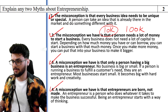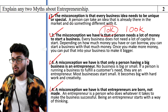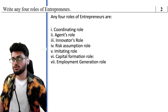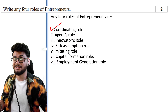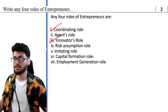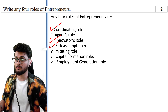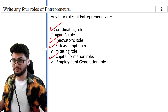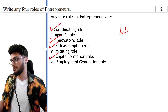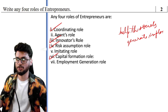Another myth: entrepreneurs are not born, they are made. Decision-making capability means any person can become an entrepreneur. For roles of entrepreneurs: they coordinate activities within their startup or company, they innovate and create new things and give new ideas, they assume risk — any startup is bound to risk, it may succeed or fail. Entrepreneurs also need to collect capital. They also help society generate employment.